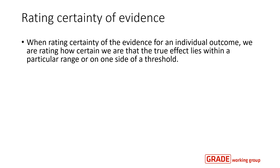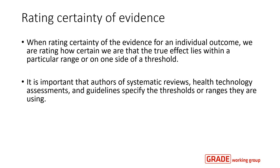When we rate the certainty of evidence for an individual outcome, we are rating how certain we are that the true effect lies within a particular range or on one side of a threshold. This means that it's important that authors of systematic reviews, health technology assessments, and guidelines specify the thresholds or ranges they are using, because it can affect the certainty ratings and how we interpret the results.